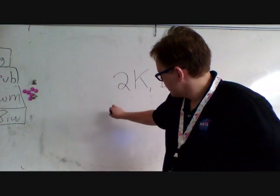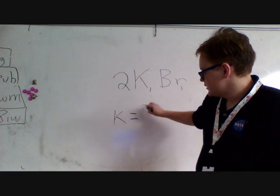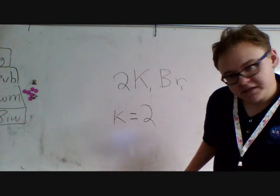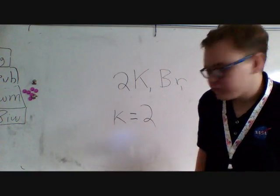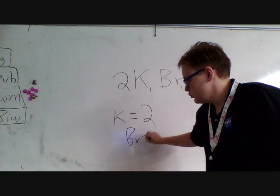So we take the invisible one for potassium and multiply it by 2. So we'll get 2 potassiums. Do the same thing for bromine. 1 times 2. 2 bromines.